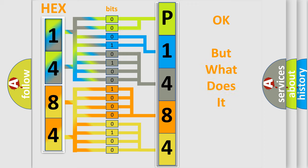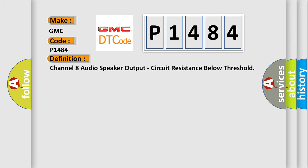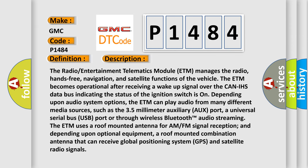The number itself does not make sense to us if we cannot assign information about what it actually expresses. So, what does the diagnostic trouble code P1484 interpret specifically for GMC car manufacturers? The basic definition is: Channel 8 audio speaker output, circuit resistance below threshold. The radio entertainment telematics module ETM manages the radio, hands-free, navigation, and satellite functions of the vehicle.